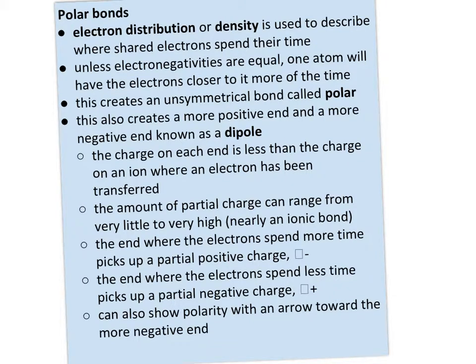Polar bonds are a big deal as we move into molecular structure and behavior. Electron distribution or density is used to describe where shared electrons spend their time. In a true covalent bond, the electrons would spend their time right in the center — half their time with each atom. But unless electronegativities are equal, one atom is going to have the electrons closer to it more of the time, creating an unsymmetrical or unequal bond referred to as a polar bond.